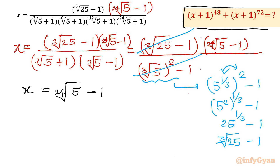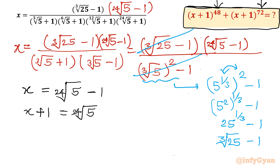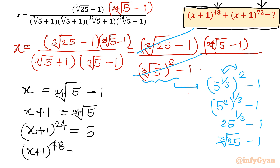Now target this expression: we need x plus 1. Adding 1 to both sides, x plus 1 equals the 24th root of 5. Now raising both sides to the power 24, we get x plus 1 whole power 24 equals 5. For the 48th power, I square both sides: 24 times 2 is 48, and on the right-hand side we get 5 squared, which is 25.